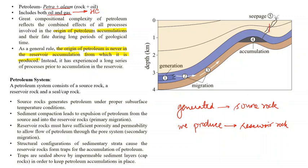This brings us to the concept of the petroleum system. How is a petroleum system defined? A petroleum system is an array of rocks — three types of rocks — which are the source rock, the reservoir rock, and a seal or cap rock.